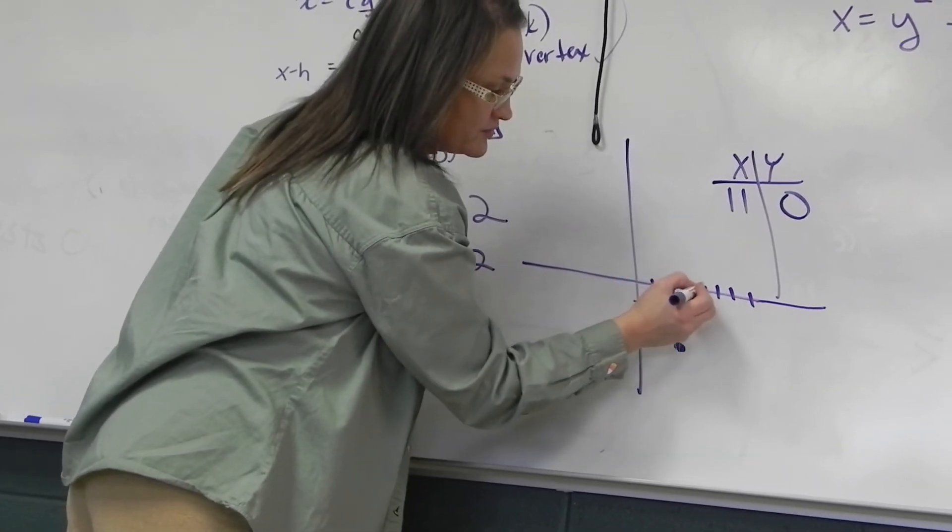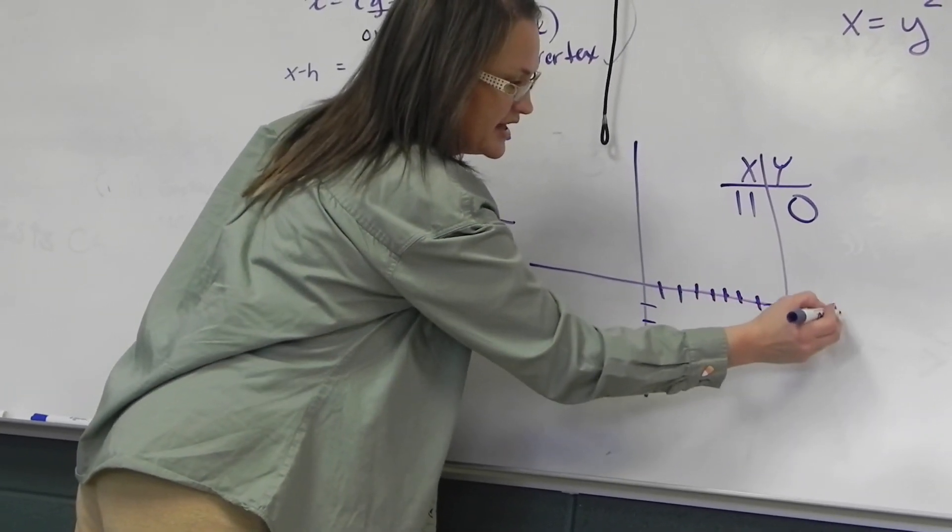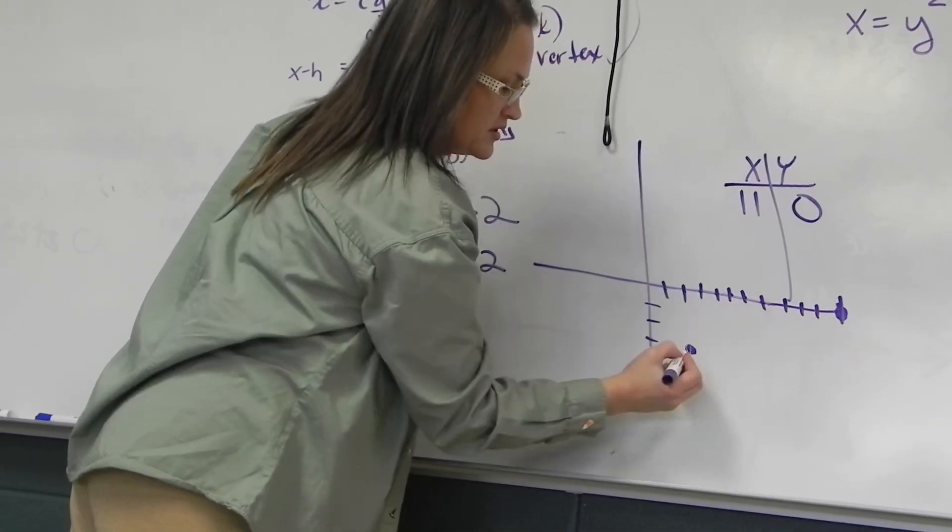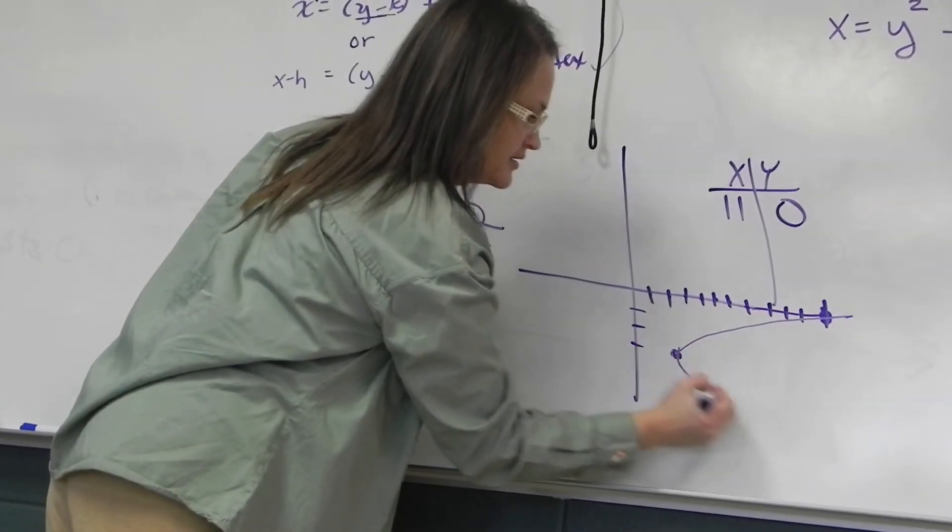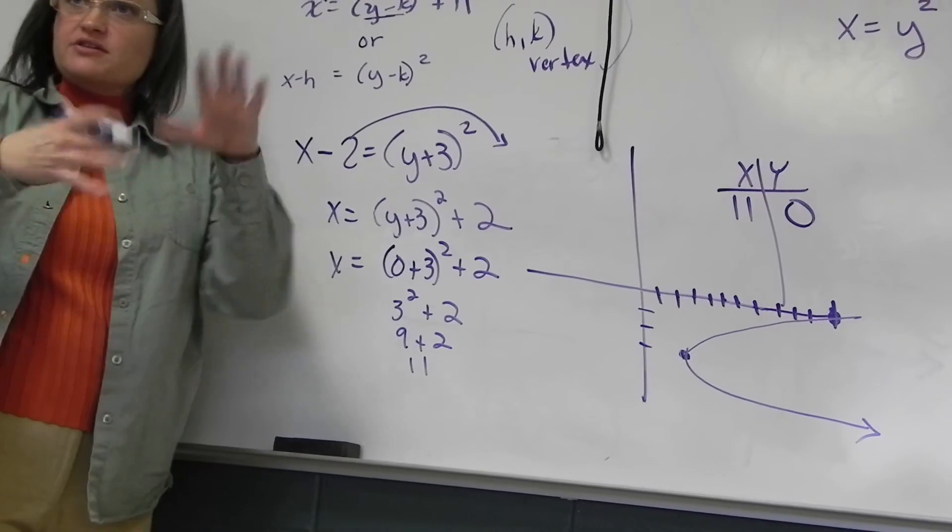But 11, 0... 1, 2, 3, 4, 5, 6, 7, 8, 9, 10, 11, 0. We'll draw that thing. Just one other point to give it something to aim for.